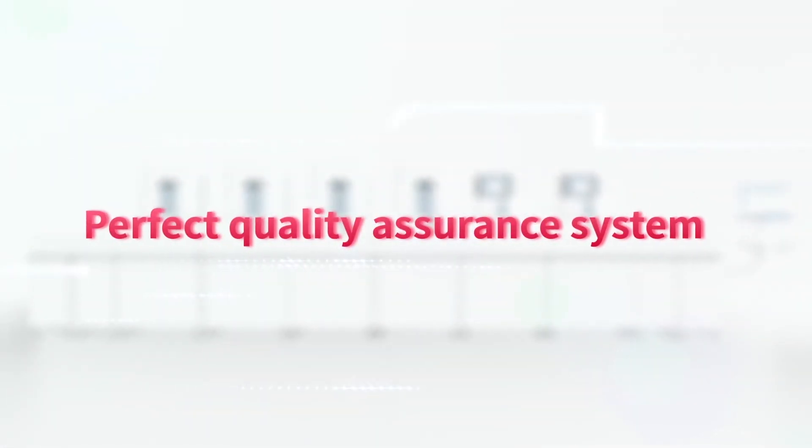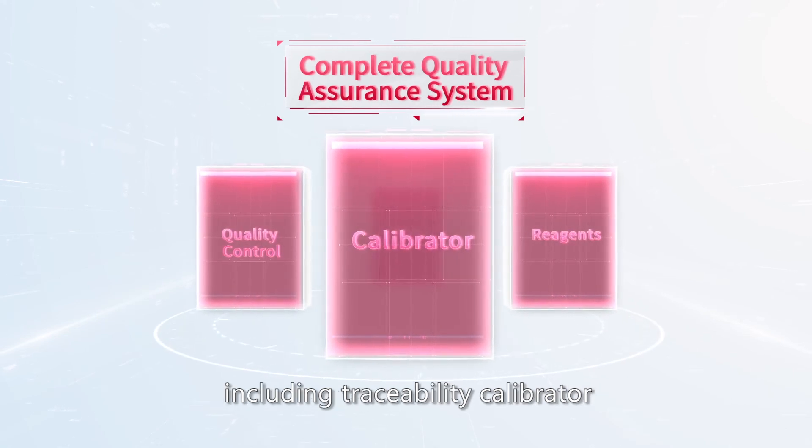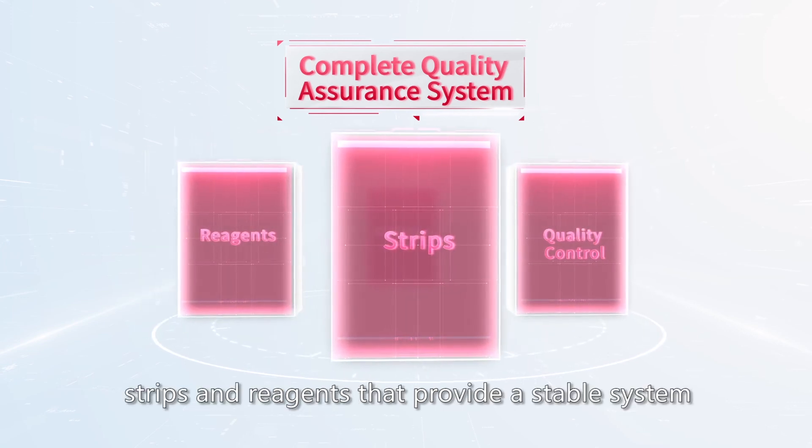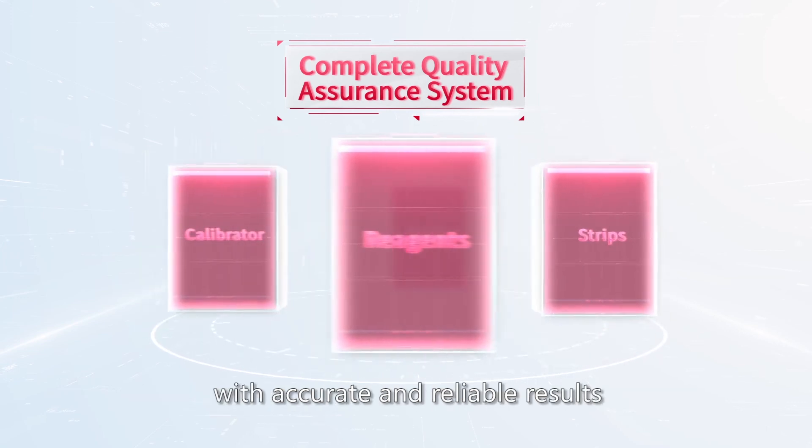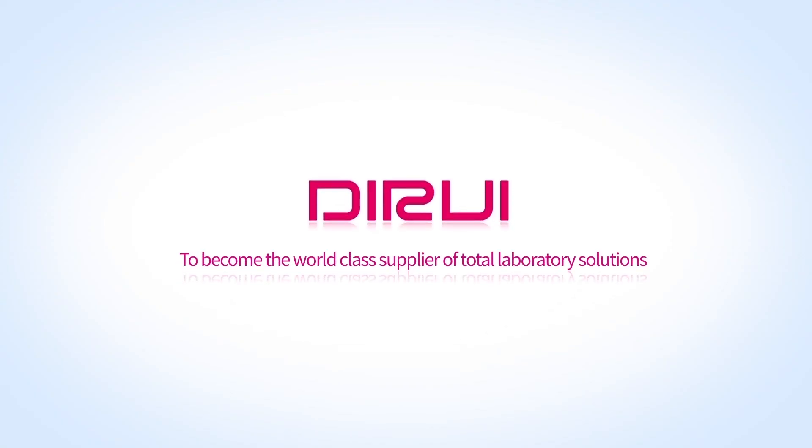MUS3600 has a complete quality assurance system, including traceability calibrator, quality control, strips, and reagents that provide a stable system with accurate and reliable results. D-Roy, to become the world-class supplier of Total Laboratory Solutions.